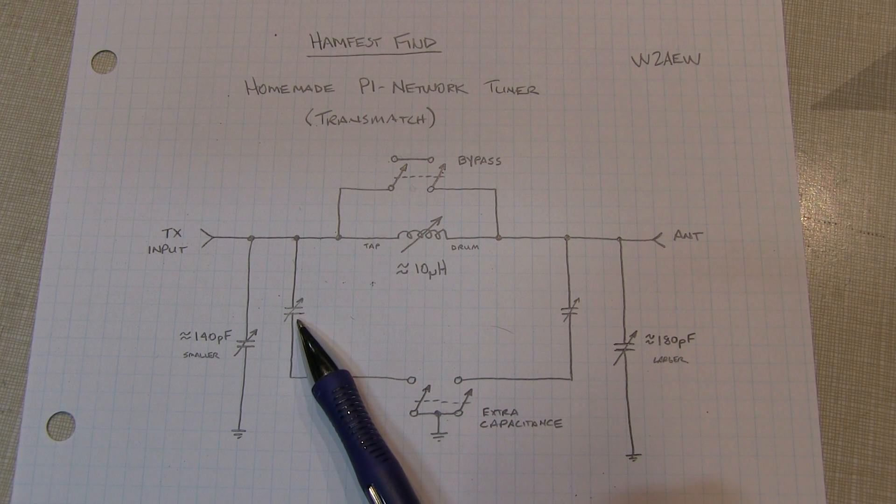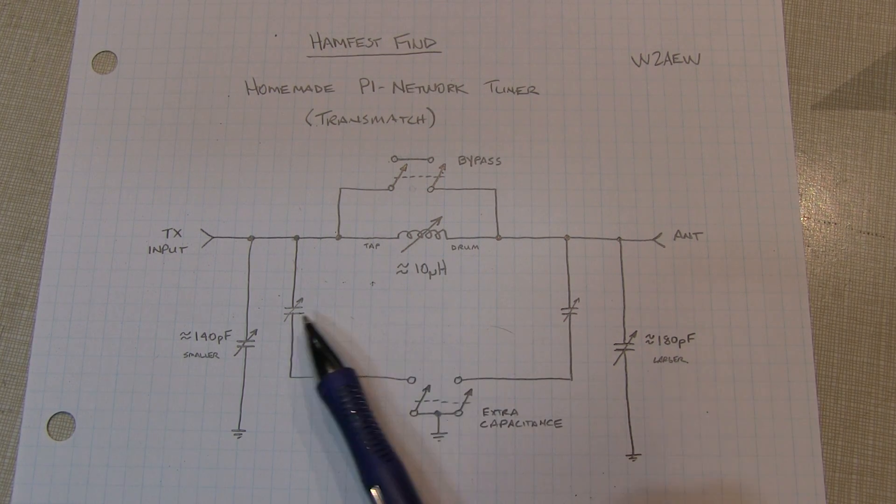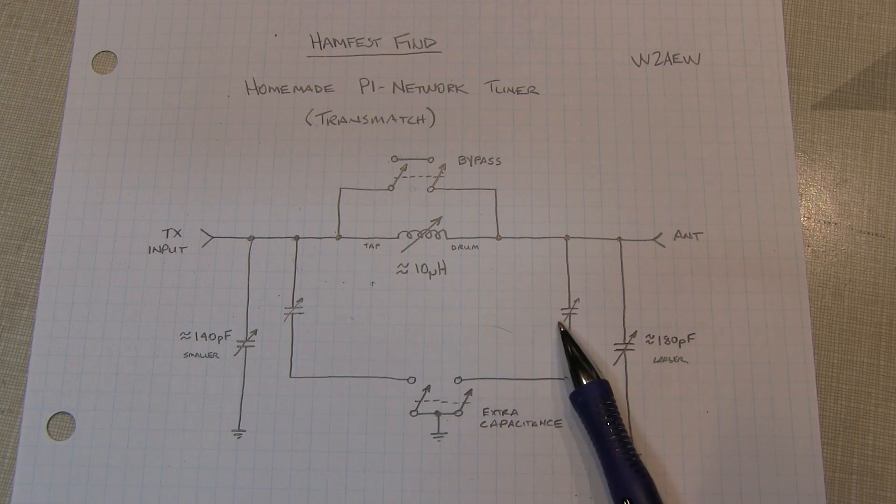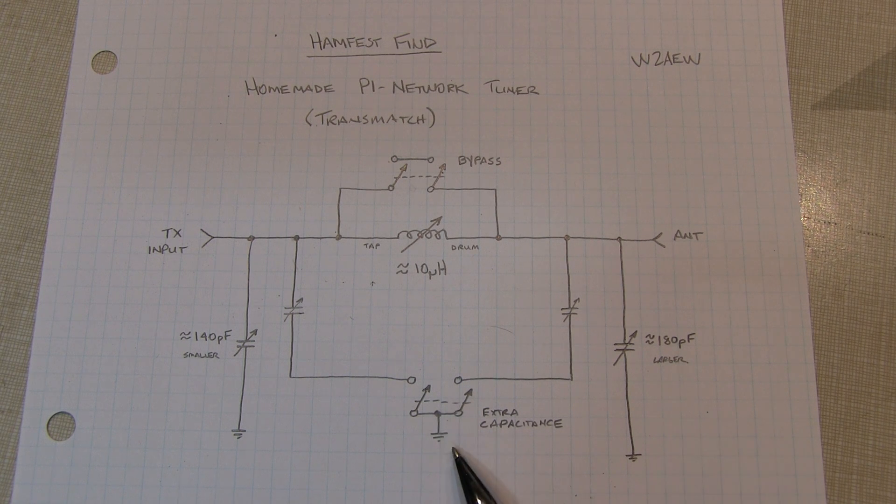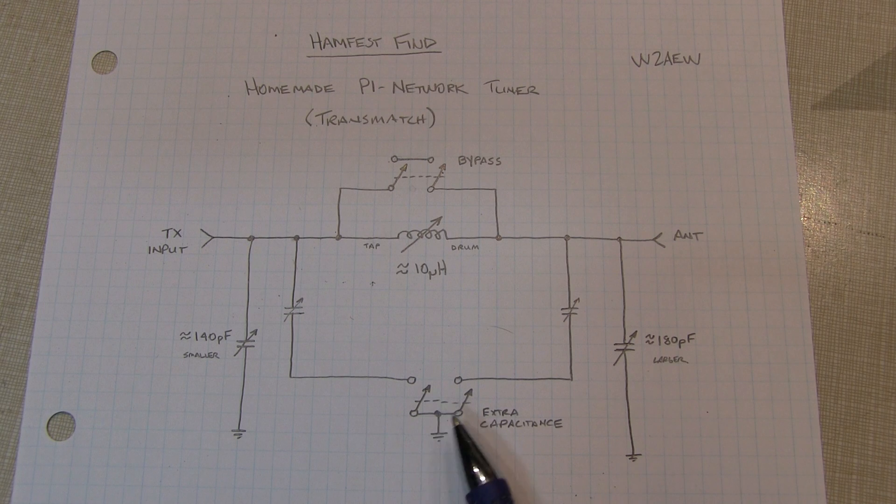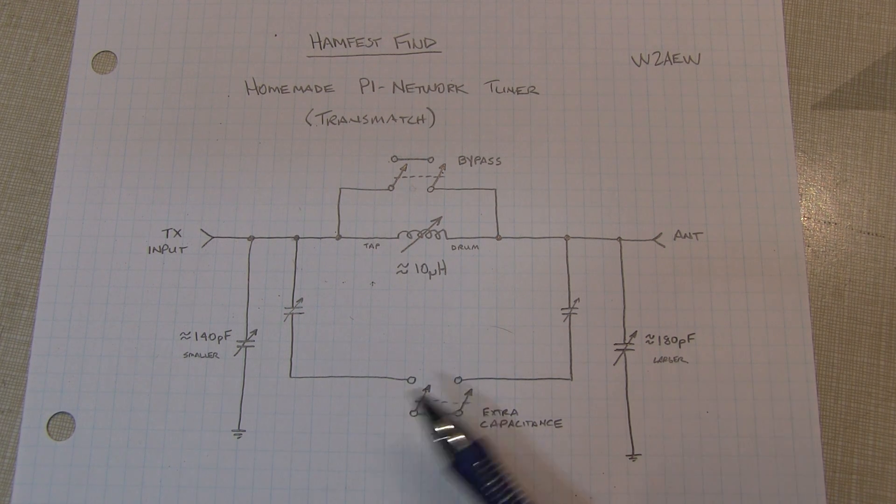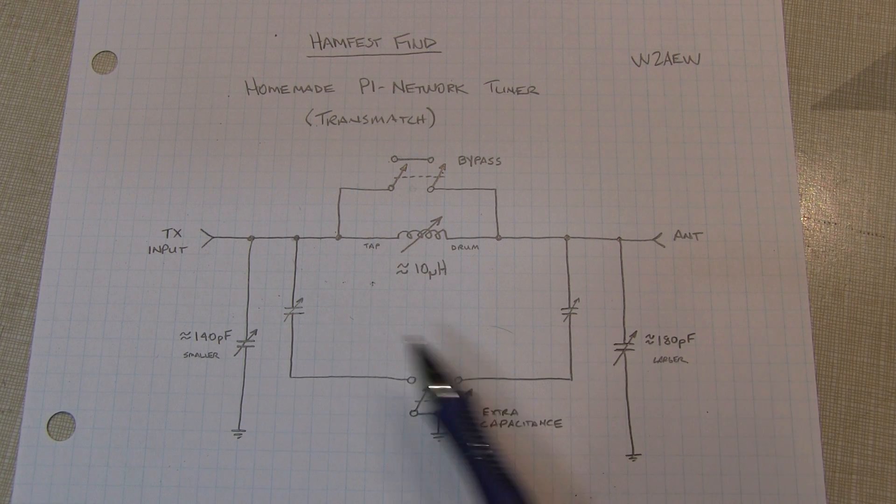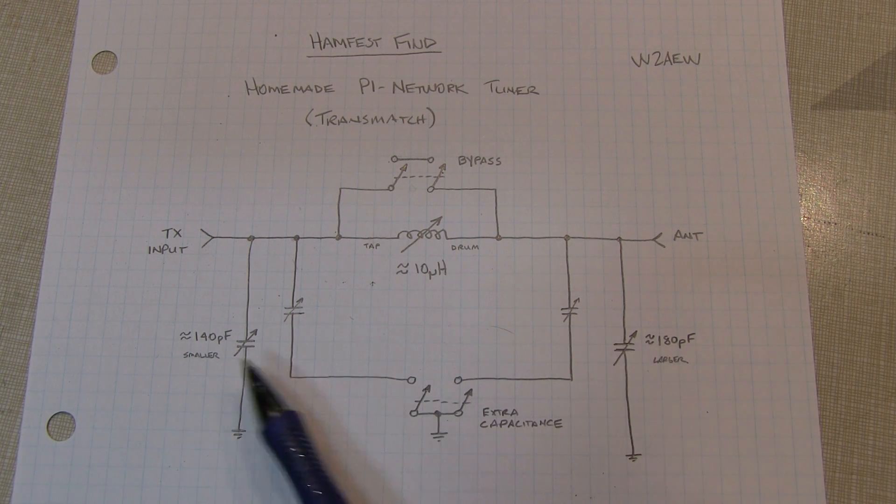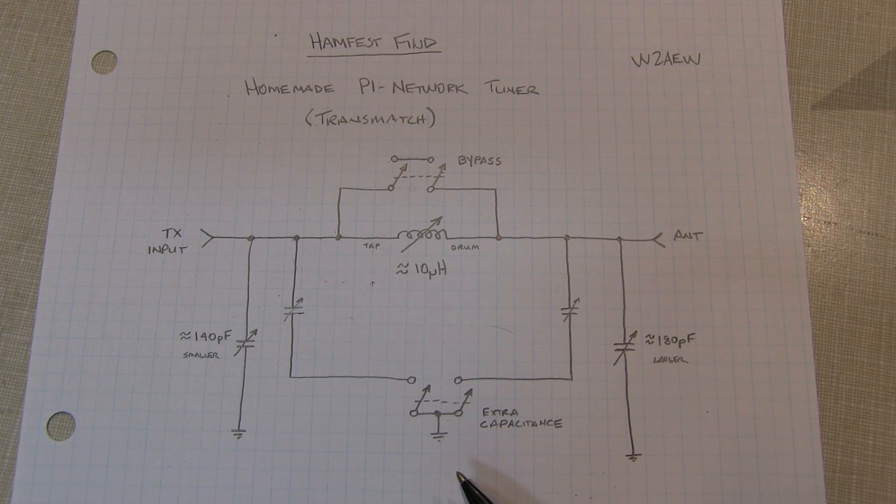And then those two multi-layer kind of trimmer caps are these two guys right here, and they're connected to a switch that allows you to flip those capacitors into circuit or not. And part of the reason I think for having this is that these variable capacitors are relatively small, 140 picofarads or so maximum and 180 picofarads on this one.